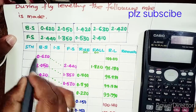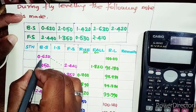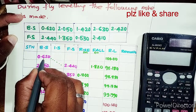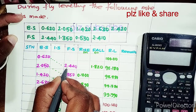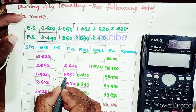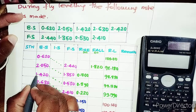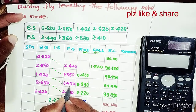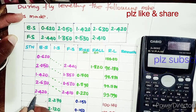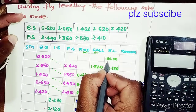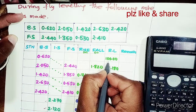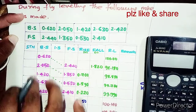Based on the given data, I have filled up the tabular column. The first backsight is 0.620, followed by 1.350, 1.420, 1.530, 2.630, 2.410, and 2.420. The RL of 100 on the benchmark is where the first backsight has been taken — this is the only given data.